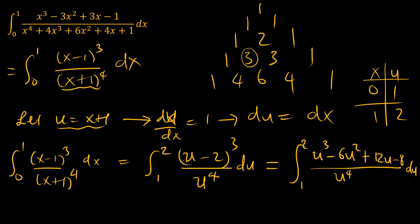That's a very interesting problem because now it's very tractable. Our problem now becomes the integral from u equals 1 to u equals 2 of u³ - 6u² + 12u - 8 divided by u⁴.